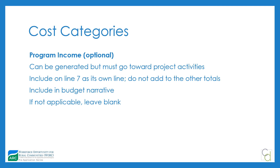One last item applies to only a few of you: program income, listed at the very bottom of Section B of the SF-424A. You are allowed to generate program income from a WORK grant, but the income must go toward project activities. Include this in line seven, but do not add program income to any other totals, including your overall total reported on the SF-424. Do include it in the budget narrative; if it's not applicable, you can leave it blank.